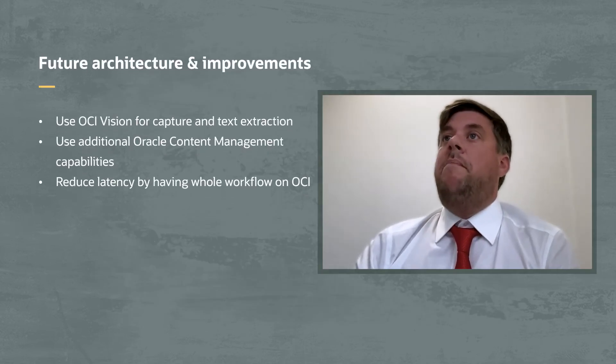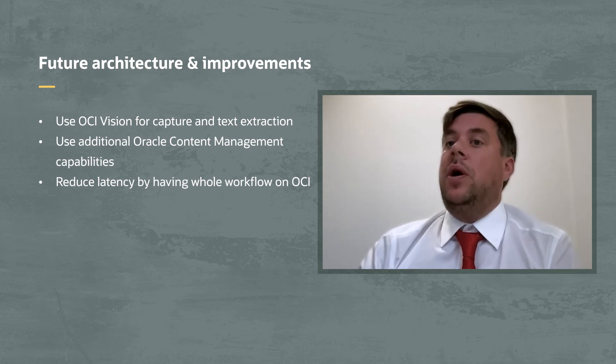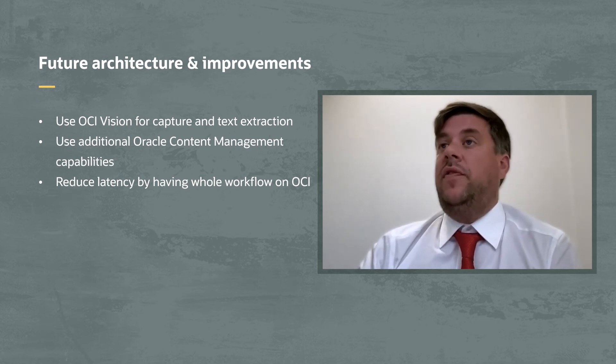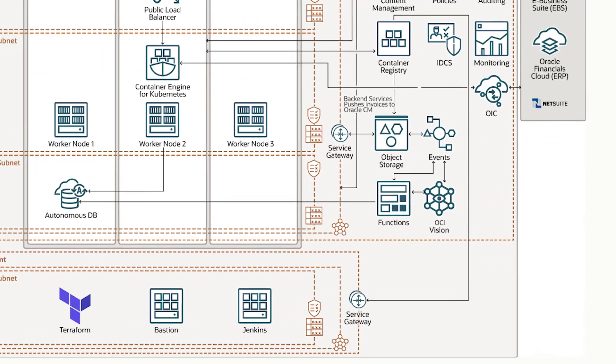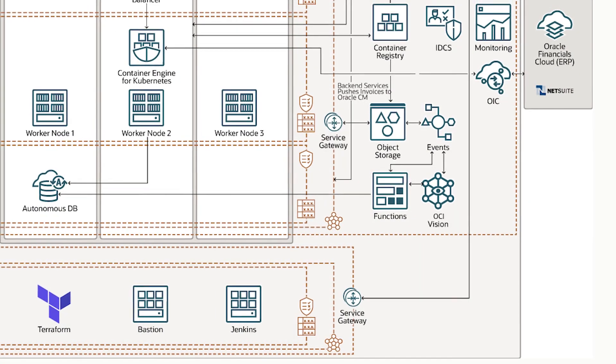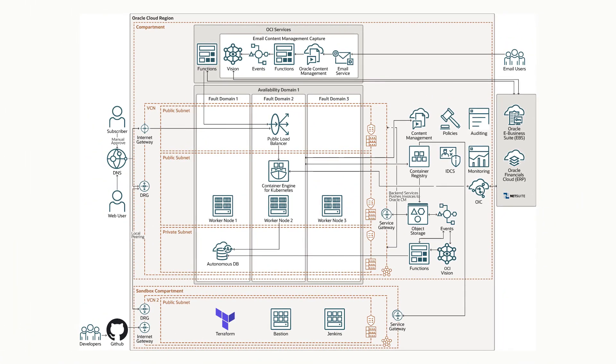It looks like in your future state, all your services will be in OCI. How is that going to help you maintain and scale your business? One of the main benefits of having everything in OCI is we're already using the Oracle Content Management System for invoice storage and back-end data, so it's a natural evolution to also use the Capture feature. The next piece is the OCI Vision Service — in our current architecture, we're making calls back out to AWS for the extraction, which adds an extra step and the worry of latency. Using the OCI Vision Service and keeping everything within Oracle Cloud is the natural evolution.